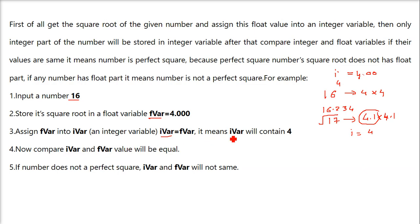Then we will compare this integer variable with the float variable, that is we will compare this 4 with 4.00 and this 4.1 with 4. If you see 4 and 4.00 are equal, they are same. So now you can say this is a perfect square.